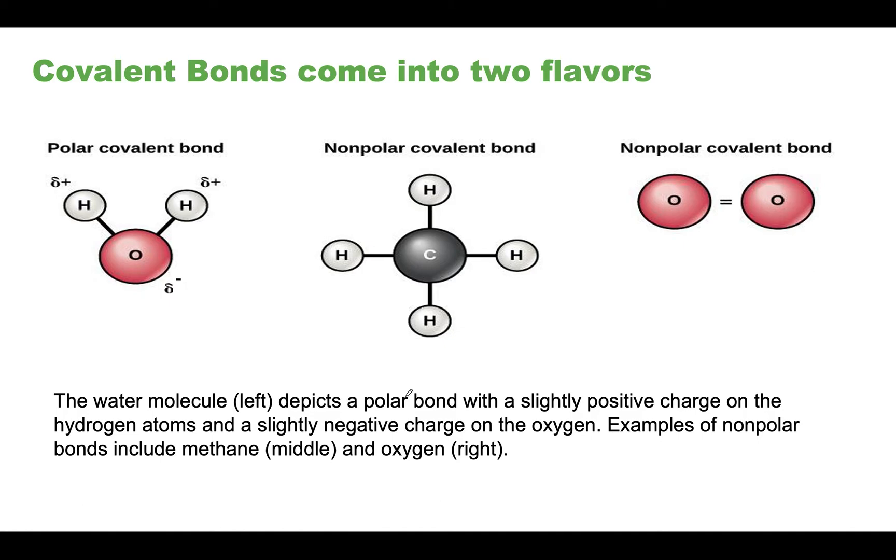Covalent bonds come in two different flavors. Covalent bonds are either polar or they're non-polar. This is a molecule of water and it is polar. The reason it is called polar is because you can see that at its opposite poles it has different charges. Electrons and charges aren't distributed evenly across this molecule. But with respect to methane and molecular oxygen, the electrons are shared between molecules evenly so there is no buildup of electron on one side and a lower amount of electron on the other side.